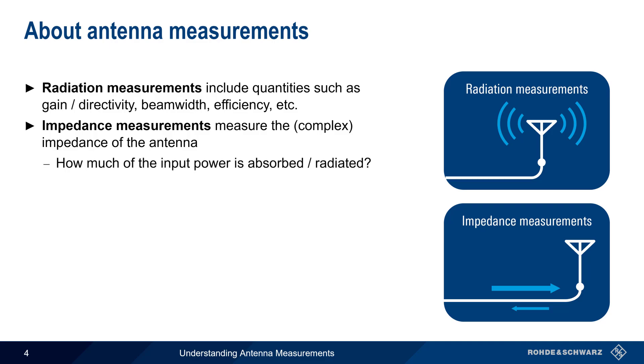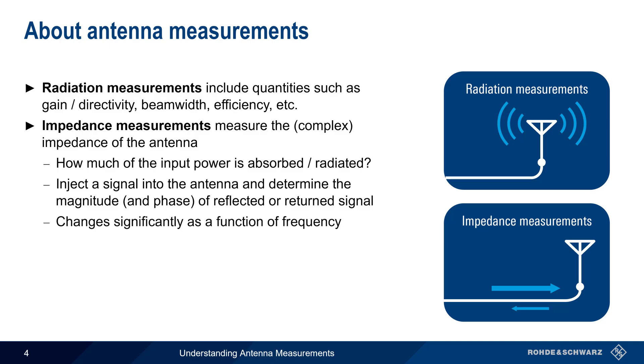The impedance of an antenna determines how much of the input or transmit power is absorbed or radiated by the antenna, and how much is returned to the transmitter. This is determined by injecting a signal into an antenna, and then measuring the magnitude and phase of the signal reflected or returned from the antenna. As mentioned a few moments ago, this will change, often substantially, as a function of frequency.